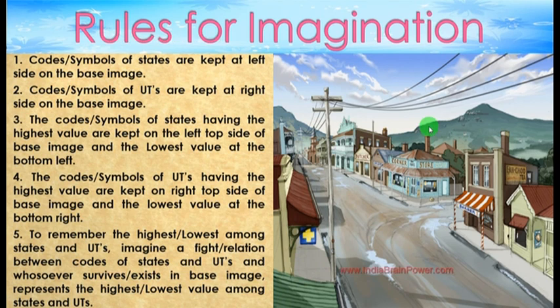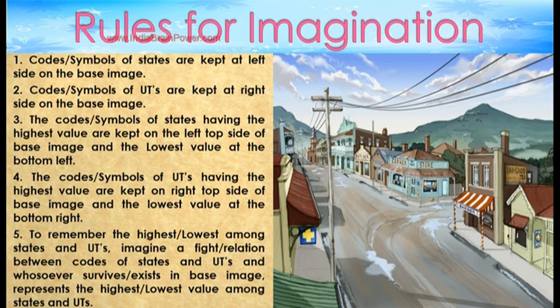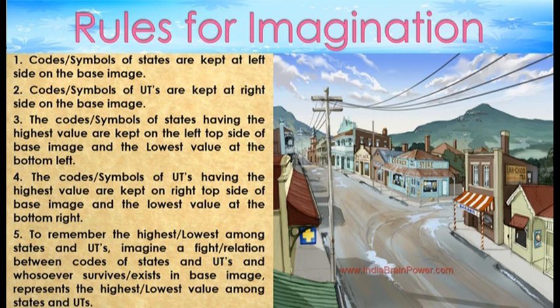To remember the highest or lowest among states and UTs, imagine a fight or relation between the codes of states and UTs. Whoever survives, exits, or wins in the base image represents the highest or lowest value among states and UTs.